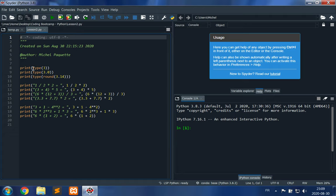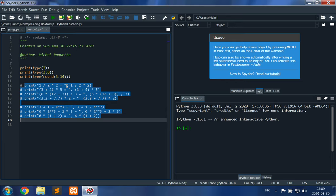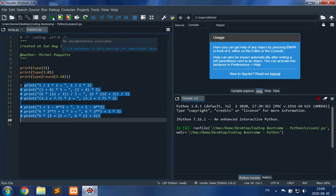One to print type of 3, one to print type of 3.0, and another to print type of round of 3.14. I don't need the other statements, so I will comment them by pressing Control+1. Now I'll run this and see the results.